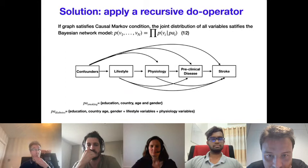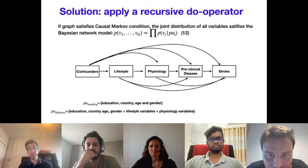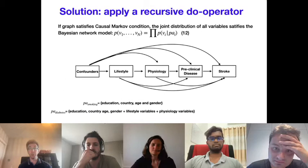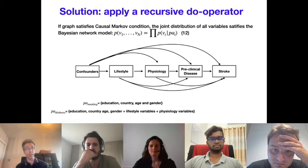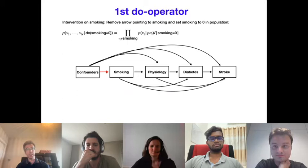Pearl popularized this approach using the do-operator: what would happen to the causal graph under an intervention eliminating smoking from the population? You remove the arrows going into smoking — eliminating its direct causes. To simulate data from the intervention distribution, you fit probability models for each node as functions of its parents, then simulate data assuming smoking equals zero recursively through the graph.